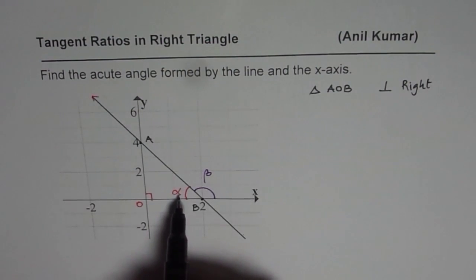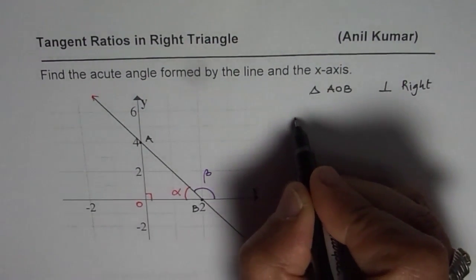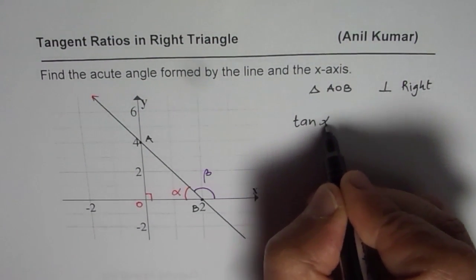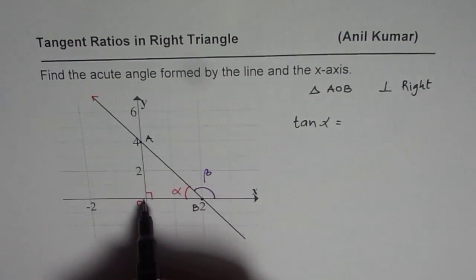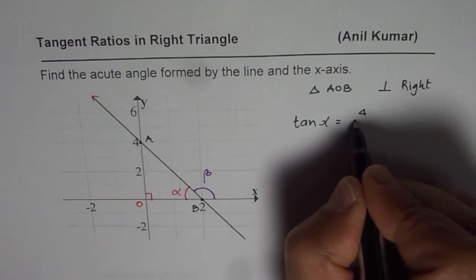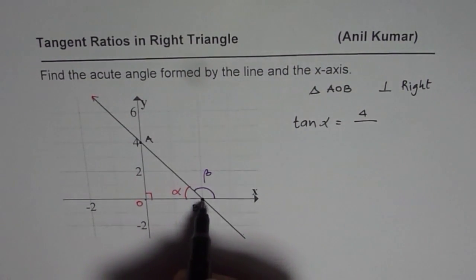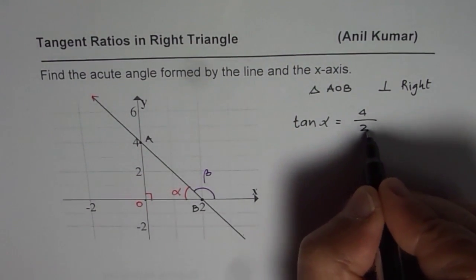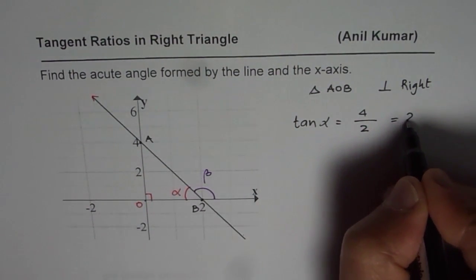So if you see from angle alpha, we can say tan of alpha equals opposite side. Opposite side is 4 units divided by the adjacent side which is 2 units. It is 4 over 2, or tan alpha equals 2.